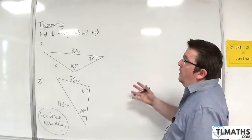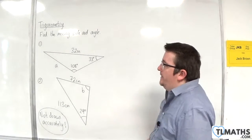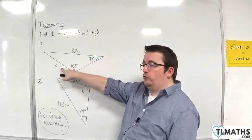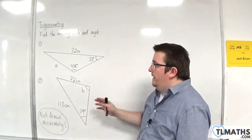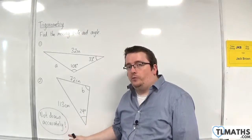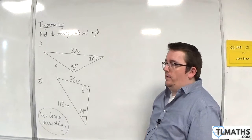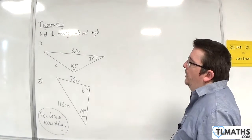In this video, I'm going to work out the missing side and angle. We've got a missing side in this triangle and a missing angle in this triangle here. Just to be clear, these two triangles have not been drawn accurately.